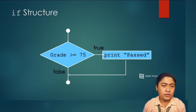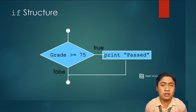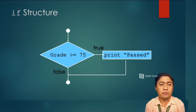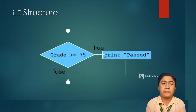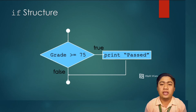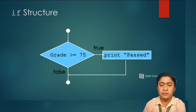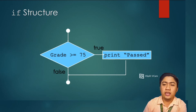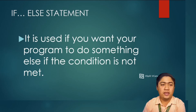For example, if your grade is greater than or equal to 75, it will result to true and it will output or print 'passed.' Once your grade is not greater than or equal to 75, it will be ignored and result to false. That's the if statement.